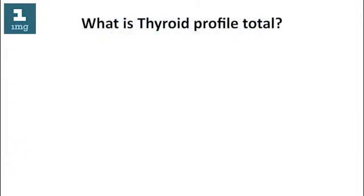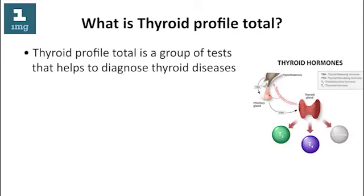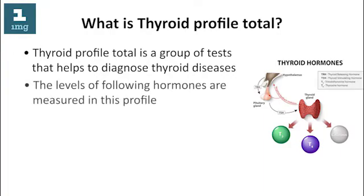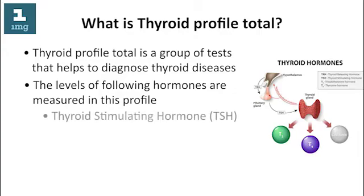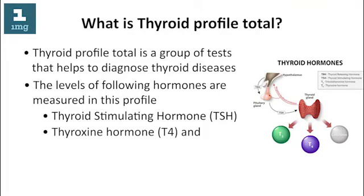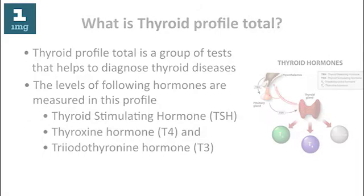What is thyroid profile total? Thyroid profile total is a group of tests that helps to diagnose thyroid diseases. The levels of the following hormones are measured in this profile: thyroid stimulating hormone (TSH), thyroxine hormone (T4), and triiodothyronine hormone (T3).